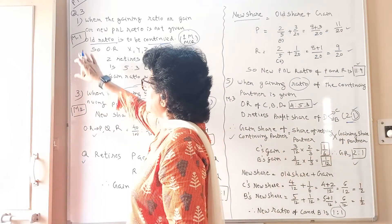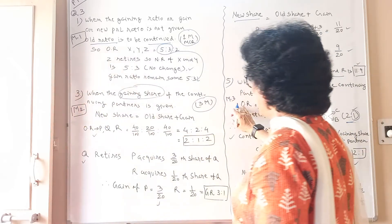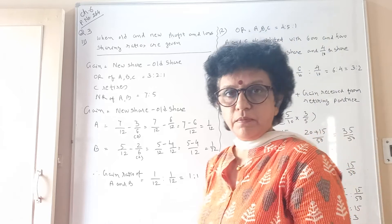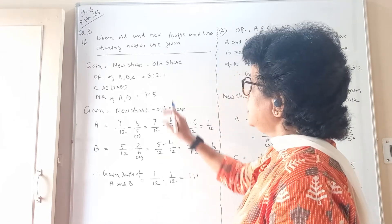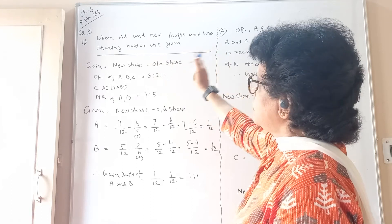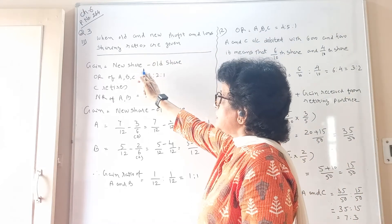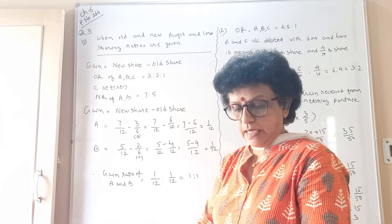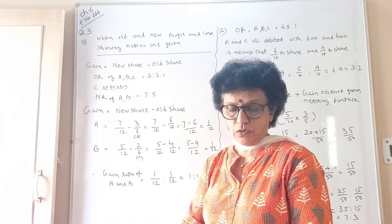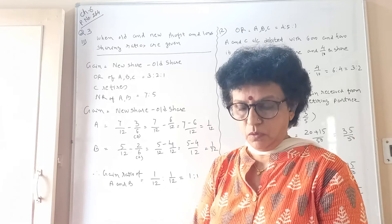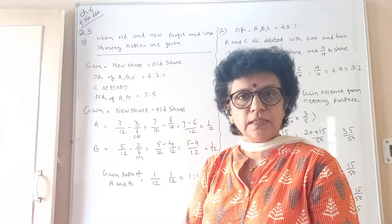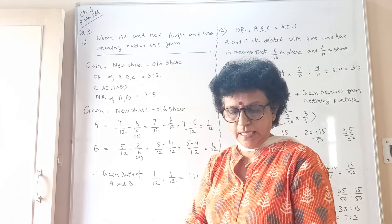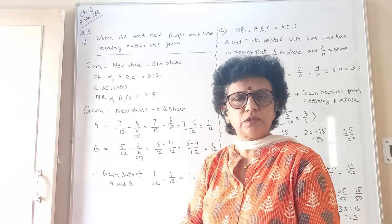In this manner you apply the formula as per the method — method 1, method 2 and method 3. Now method 4: when the old and the new profit and loss sharing ratio are both given. Question number 11: A, B and C are partners sharing profit and loss in the ratio of 3:2:1 — this is the old ratio. C retires. Always pay attention to who is retiring and underline it. The new profit sharing ratio of A and B is decided at 7:5.